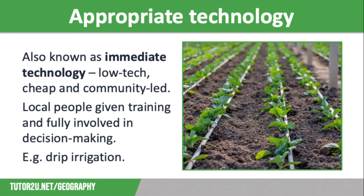The final technique is appropriate technology, also known as intermediate technology. It involves low-tech projects that are cheap and managed by the local community, such as drip irrigation schemes. This contrasts with many aid projects that aim to increase food supply through large-scale projects requiring expensive technology, specialist skills, fuel, and spare parts — which, while effective, are not appropriate to community needs and often fail once NGO support is withdrawn. Appropriate technology is accessible to local communities, set up with full community involvement in decision-making and given the training needed to run the scheme — for example, a small engine pumping water into pipes, easy for local farmers to maintain.